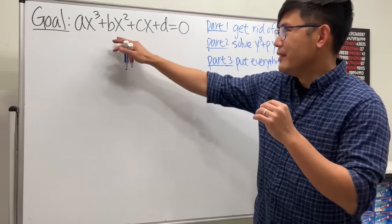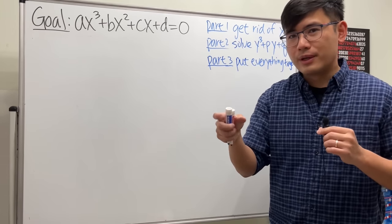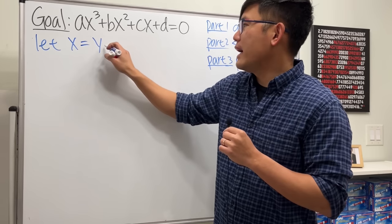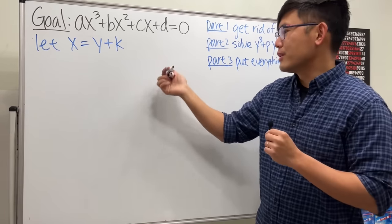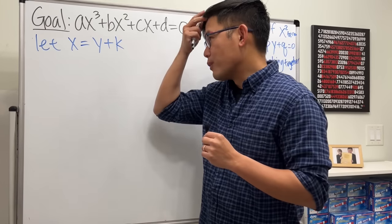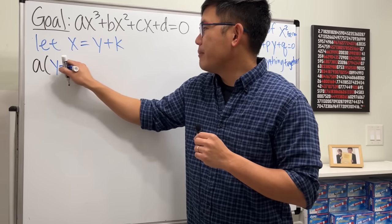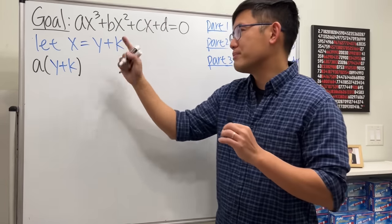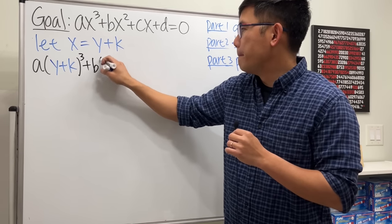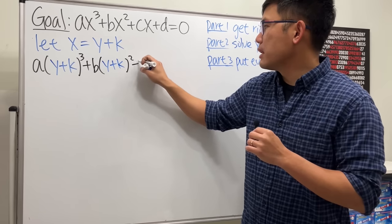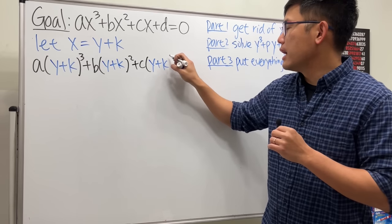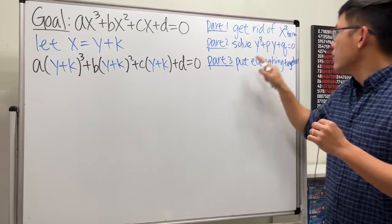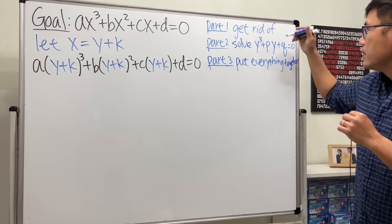What exactly do we do? Well, if you take a look at this cubic curve, let's move it around horizontally. I'm going to let x = y + k. Then plugging into a(y+k)³ + b(y+k)² + c(y+k) + d = 0. Our goal right here is to get rid of the y² term.